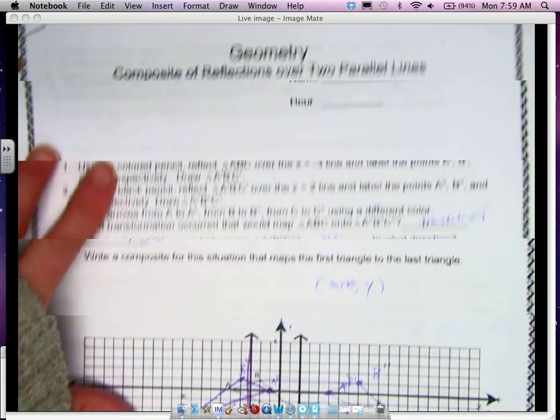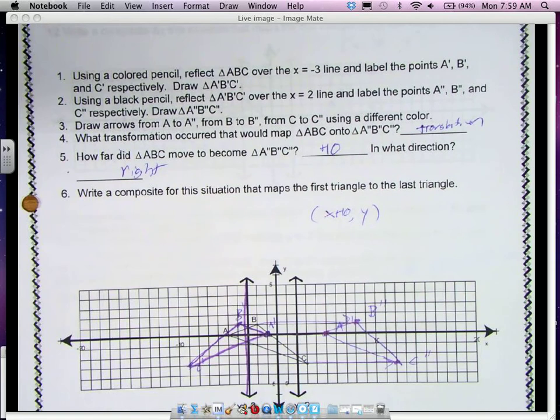So we graphed this. First we reflected it over x equals negative 3, and then we reflected it over x equals 2. A lot of yours looks different than this because it's in prettier colors because you did it in color pencil.